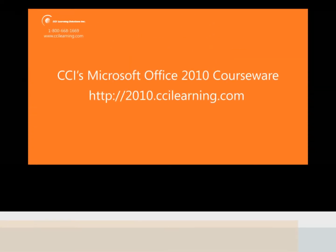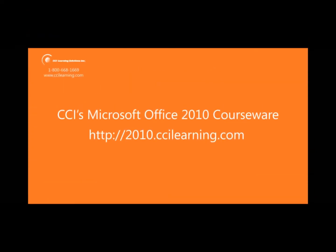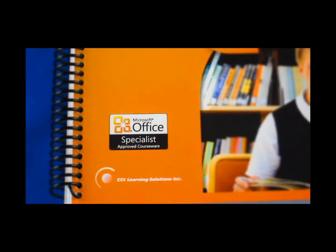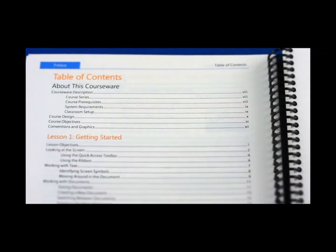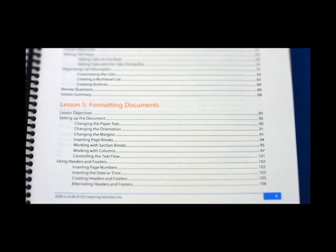Let's take a closer look at the resources available. Our books are approved as a certification preparation guide that provides and meets 100% of the exam objectives. When you open a CCI book, a table of contents outlines the topics covered in the content and provides page references to find a specific skill set. The table also outlines how skills are introduced and reinforced as the student progresses through the content.